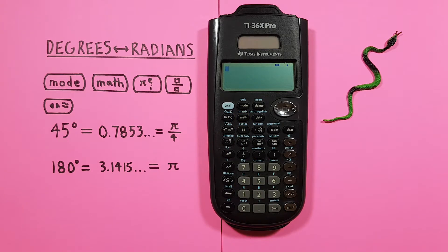The Pi key that looks like this located here. The Fraction key that looks like this located here. And the Conversion key that looks like this located here.